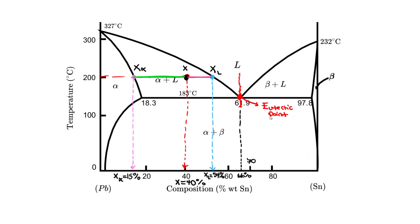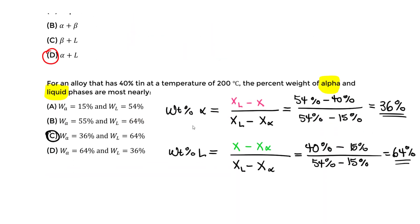The eutectic point represents the lowest temperature at which an alloy can melt from a two-solid region into a liquid. That covers the eutectic point and this example applying the lever rule. Thank you.